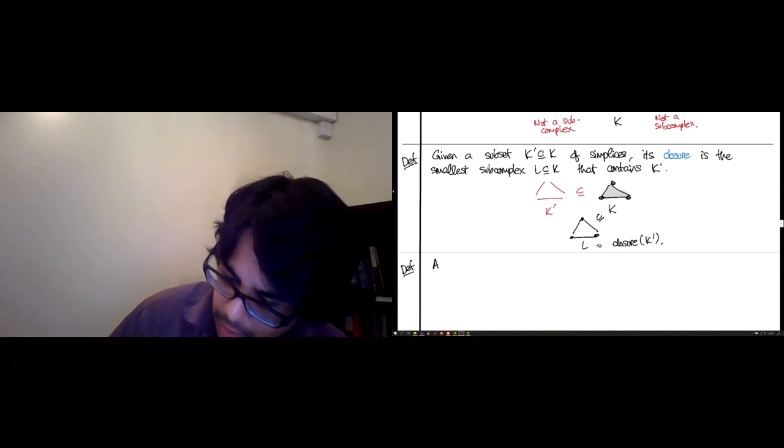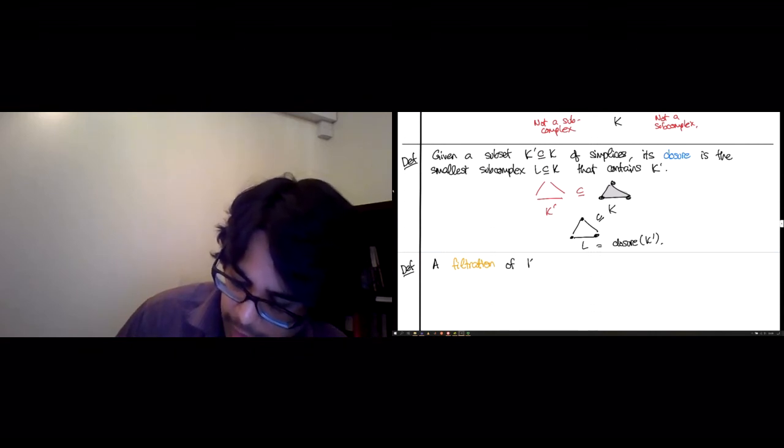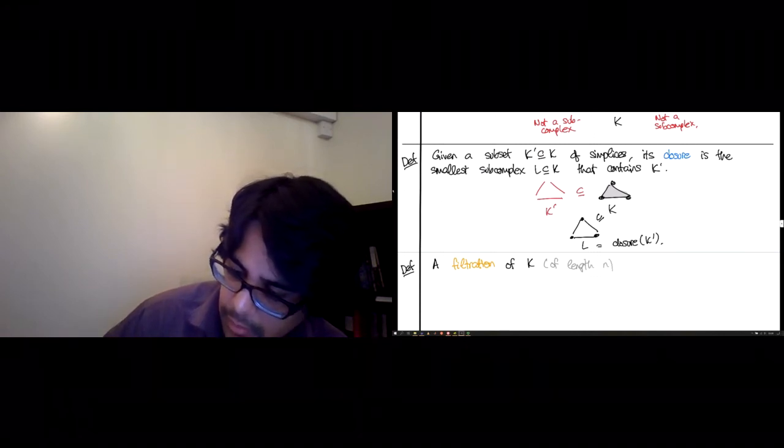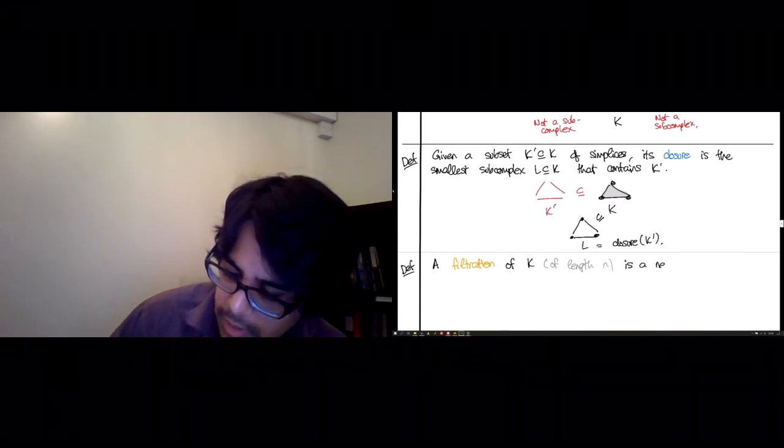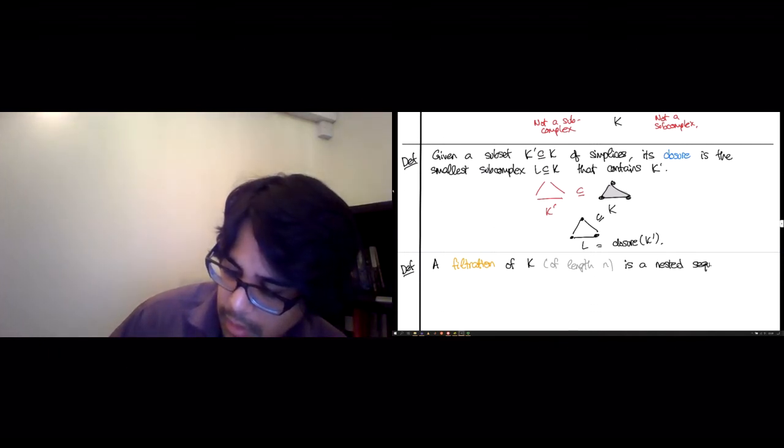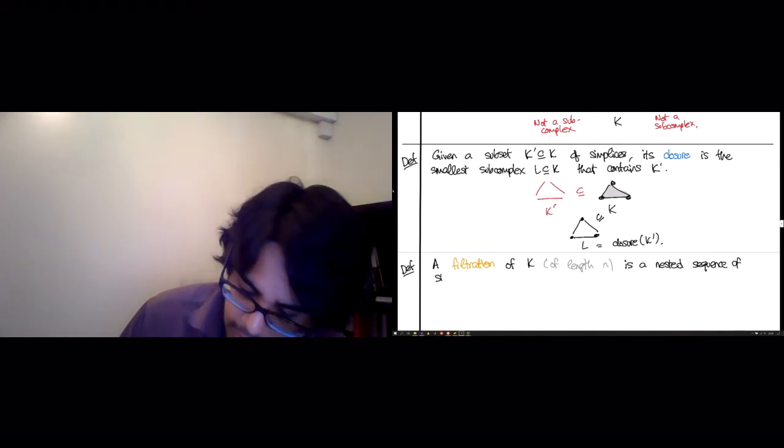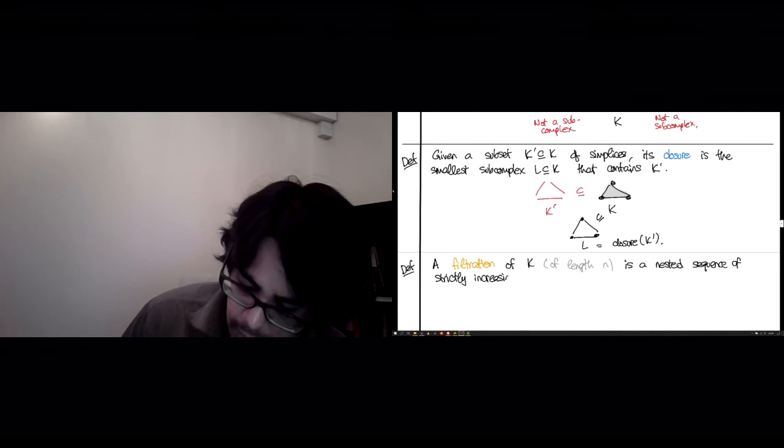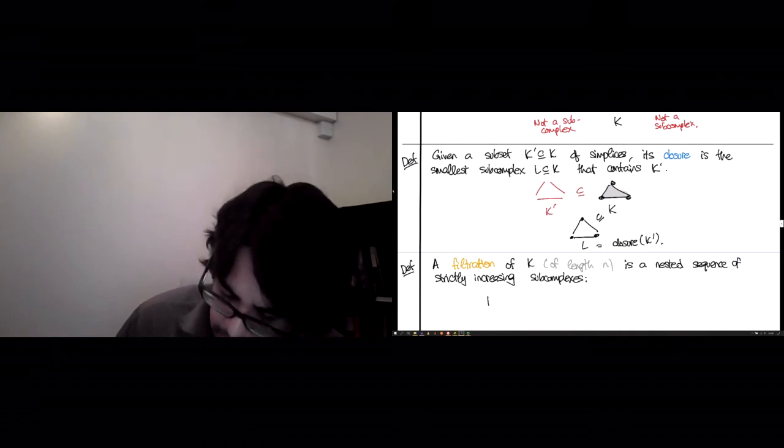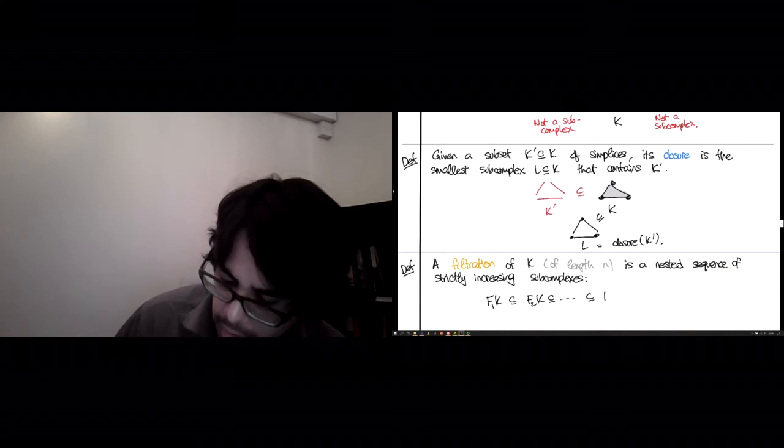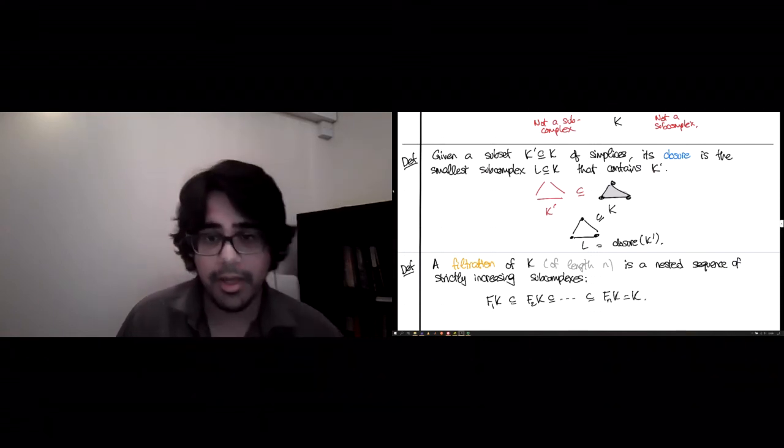A filtration of K, and I'll say of length N, is a nested sequence of strictly increasing subcomplexes. So it's usually written something like F1K subset of F2K subset all the way FNK, and this last step had a better equal K.